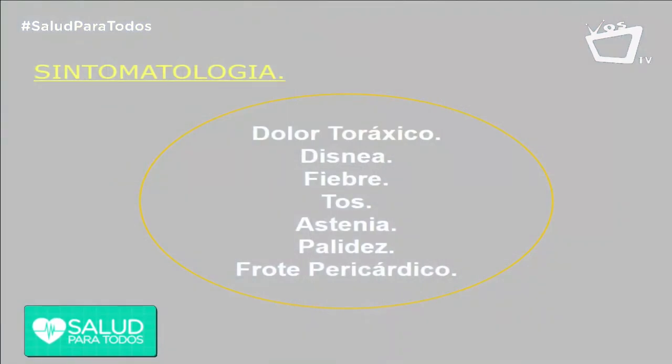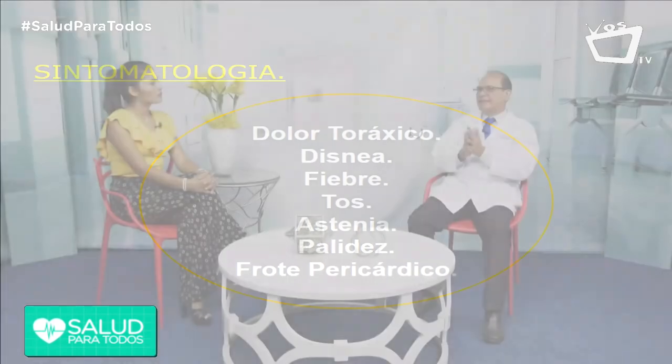¿Hay síntomas específicos y causas específicas por las que ocurra esto? Sí, por supuesto. Las enfermedades que más afectan a los niños en cualquier edad son los virus y las bacterias, que pueden producir desde la gripe hasta una neumonía. Según cada virus o bacteria, llevará a un órgano blanco a nivel cardíaco si el niño es susceptible, afectando cualquiera de las capas: pericardio, miocardio o endocardio. La sintomatología común en cada una de estas enfermedades va a ser el dolor torácico — el niño se queja de dolor, de cansancio, le da fiebre, le da tos, y el niño entra en insuficiencia cardíaca.